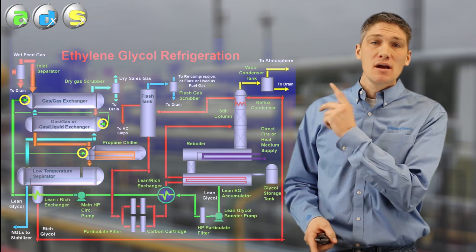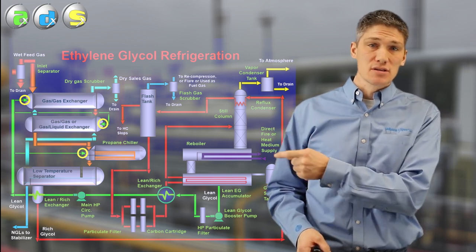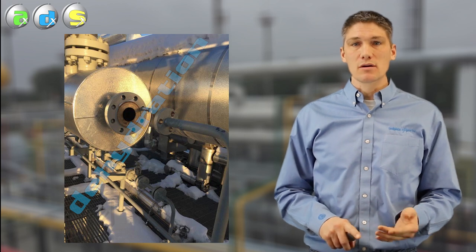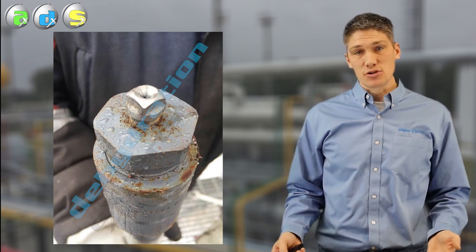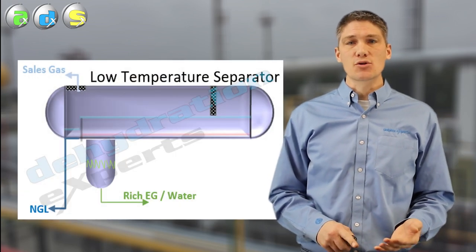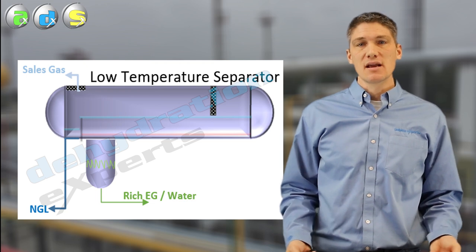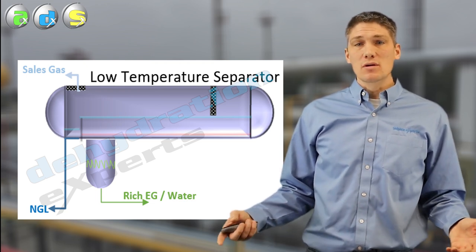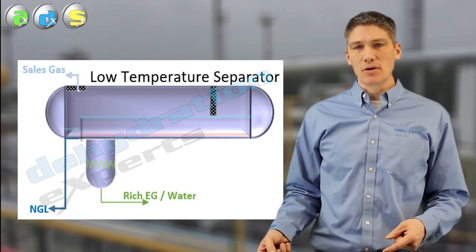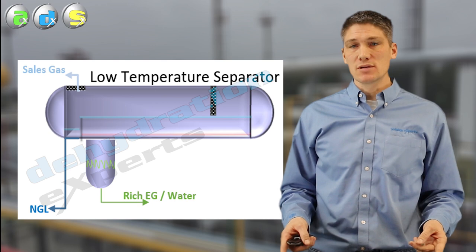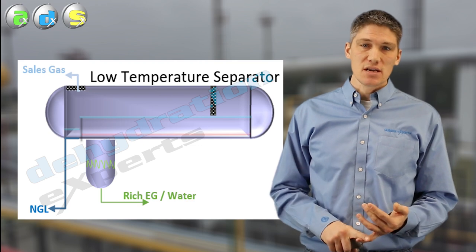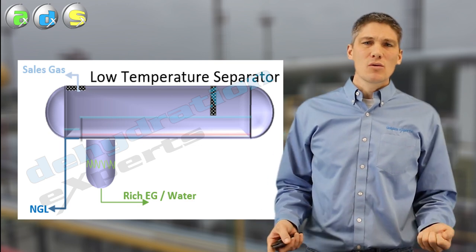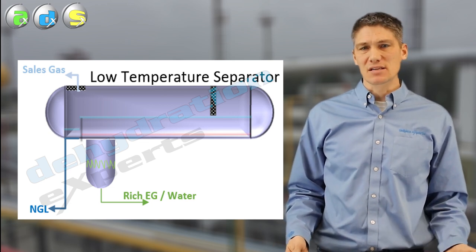Now the lean EG injection points are circled here at the various exchangers. Any condensed hydrocarbons and water along with the injected glycol are accumulated in a three-phase separator which is referred to as the low temperature separator or LTS. Because the density of the rich EG water mixture is greater than the recovered liquid hydrocarbon density, the hydrocarbon phase will actually float on top of the glycol water phase which drops out to the bottom of the separator. The rich EG water accumulates in a boot at the bottom of the separator where a heating coil is situated which aids in the separation between the rich EG and the recovered liquid hydrocarbons. The coil also cools the lean EG before being injected into the various exchangers.